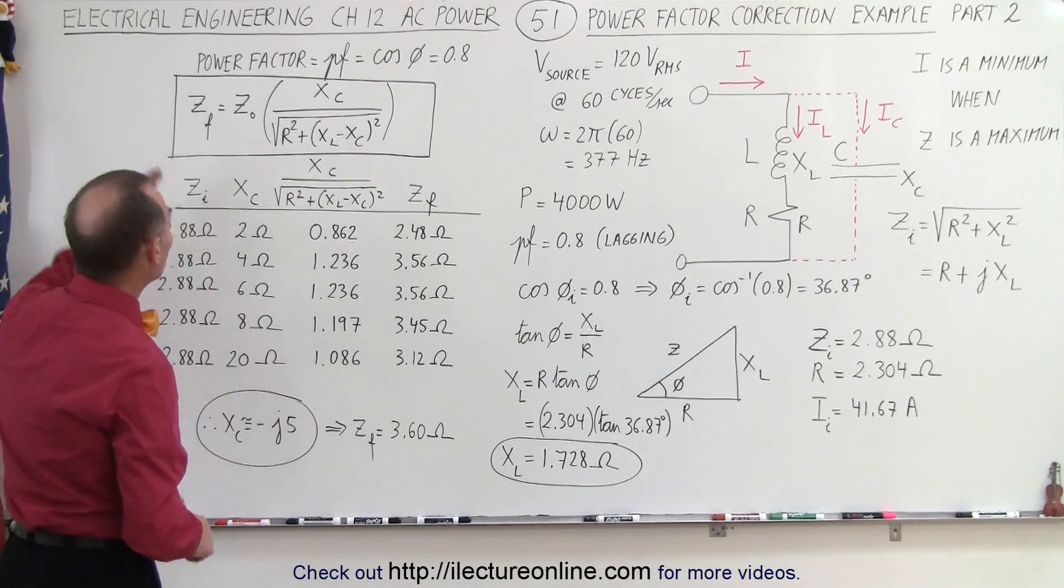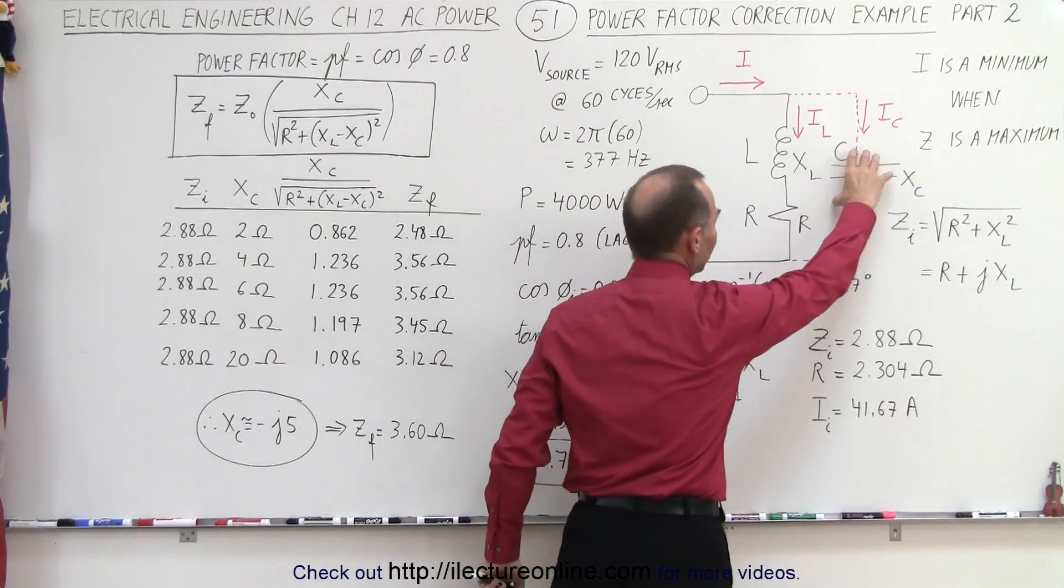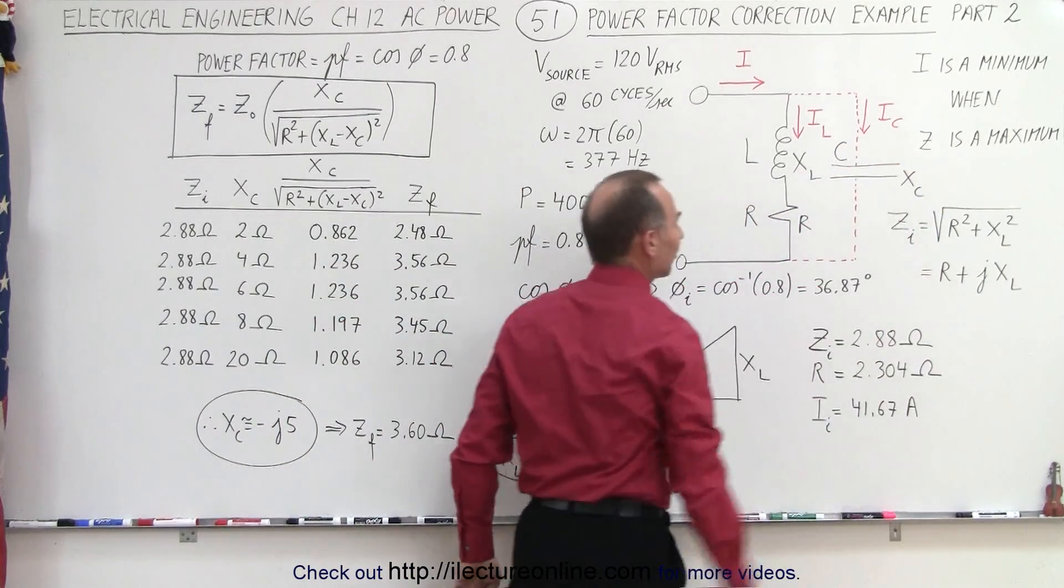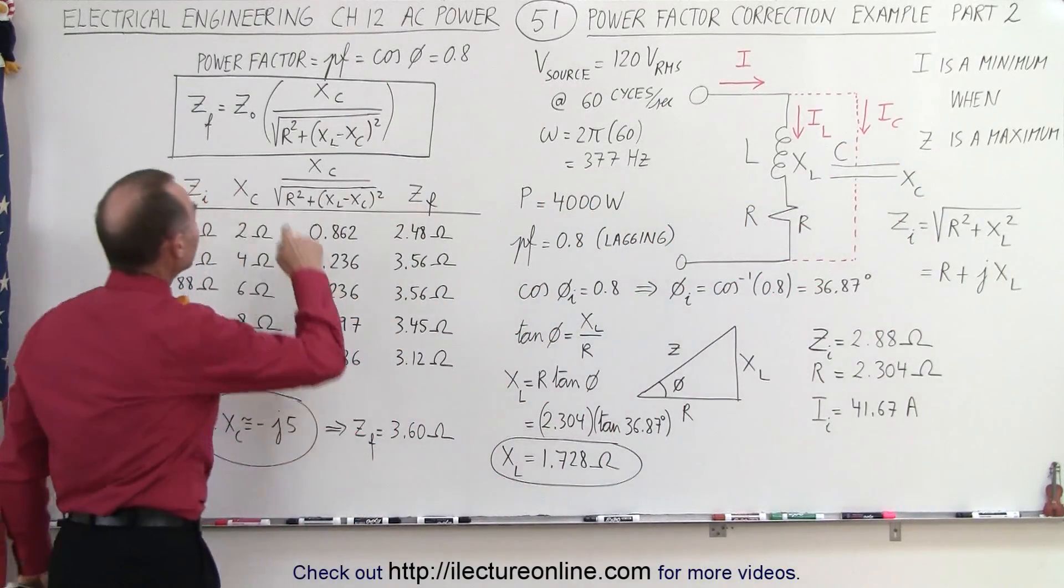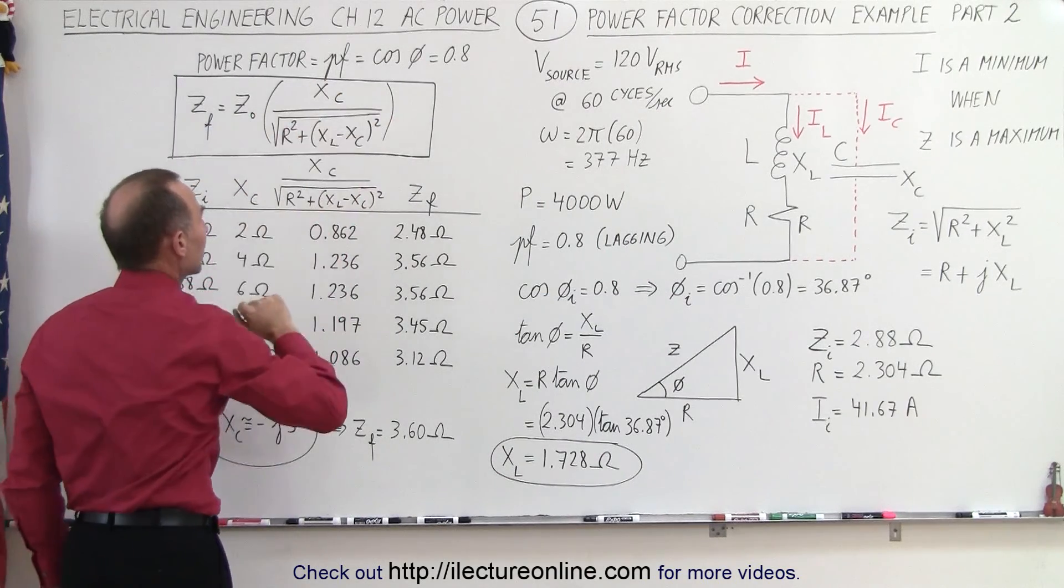And then in the video before that, we discovered that the final impedance, after we add a capacitor so that we have capacitive reactance there, can be calculated by taking the old impedance and multiplying it by this factor right here.